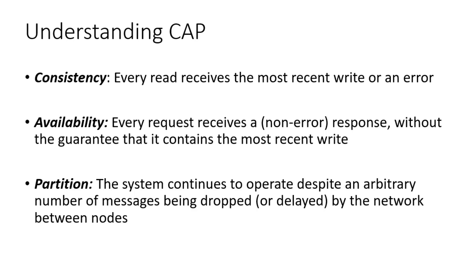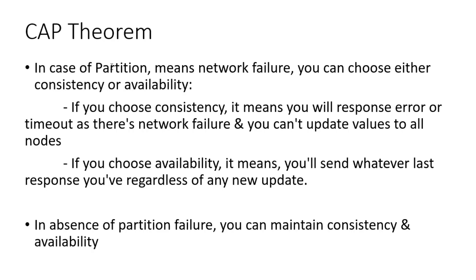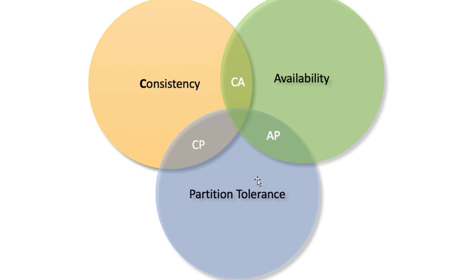Now what is the CAP theorem? The CAP theorem says that out of these three properties, you can achieve two at a time — either Consistency and Partition tolerance, or Availability and Partition tolerance, or Consistency and Availability. The main point is: in case of network failure, when there is a partition, you must choose either Consistency or Availability.